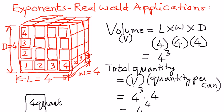The volume can be found by multiplying the long side times the width times the depth. The long side is four cans, the width is four cans, and the depth is four cans. Therefore, we can express that as an exponent: four to the power of three.